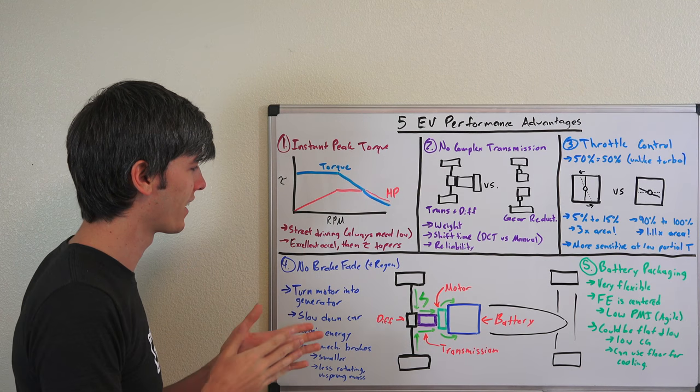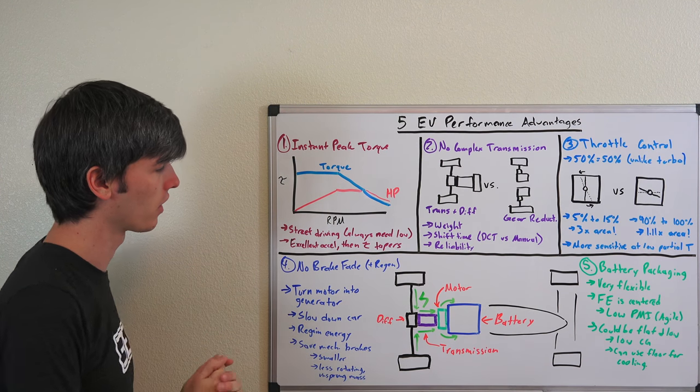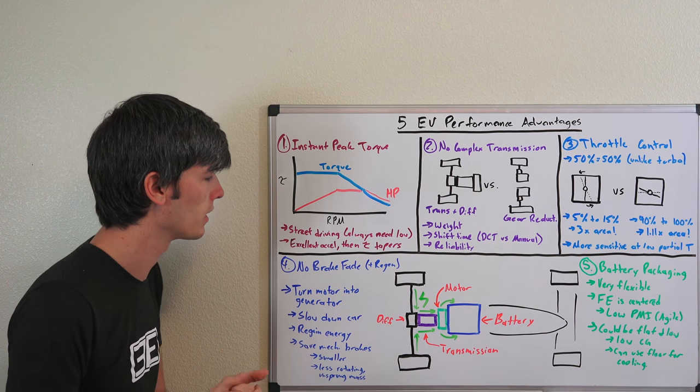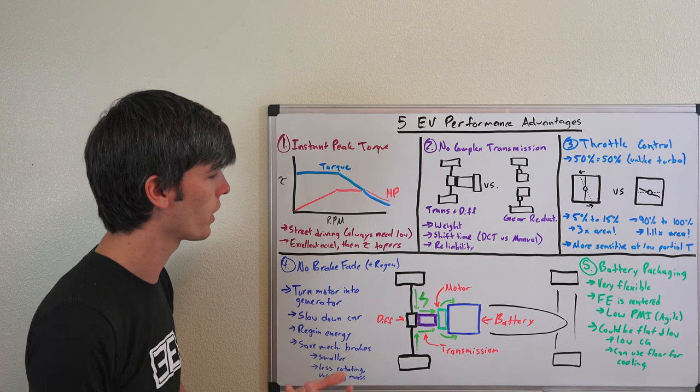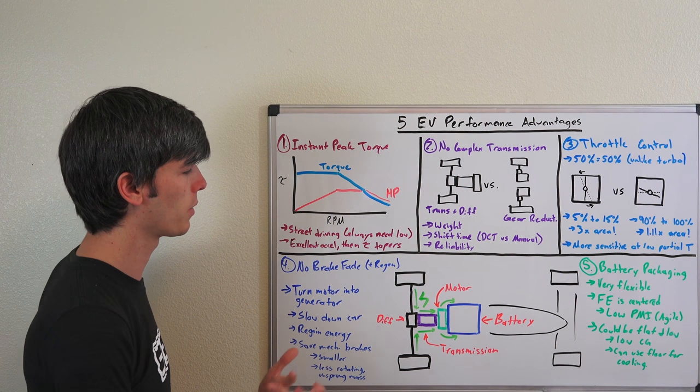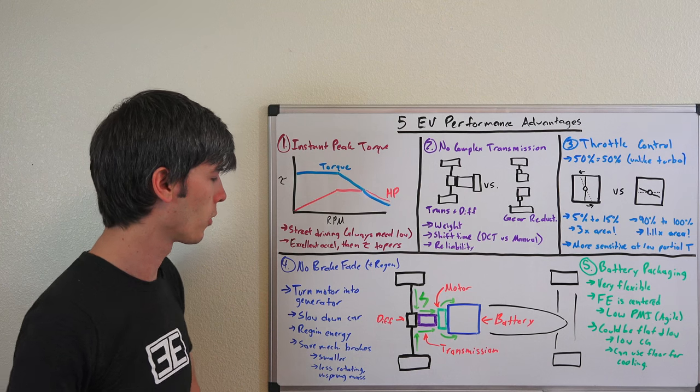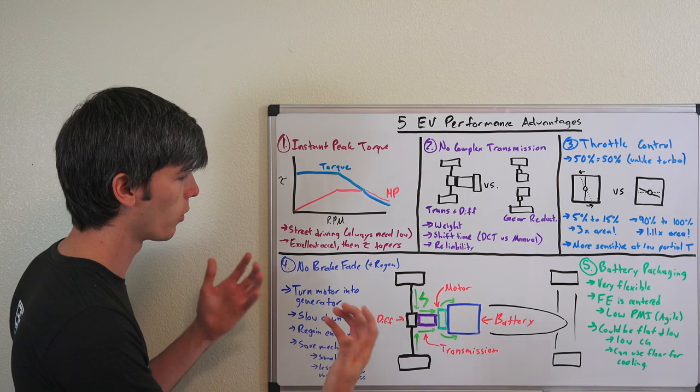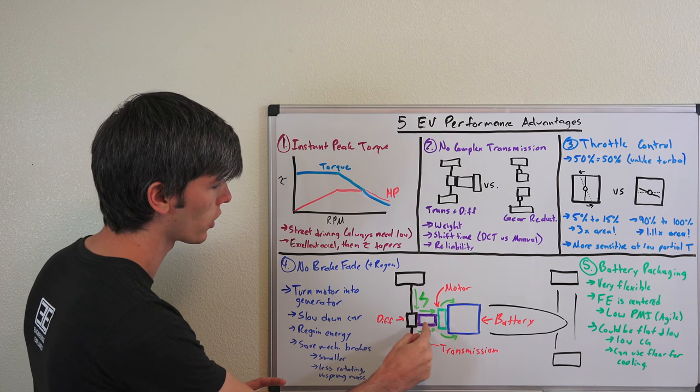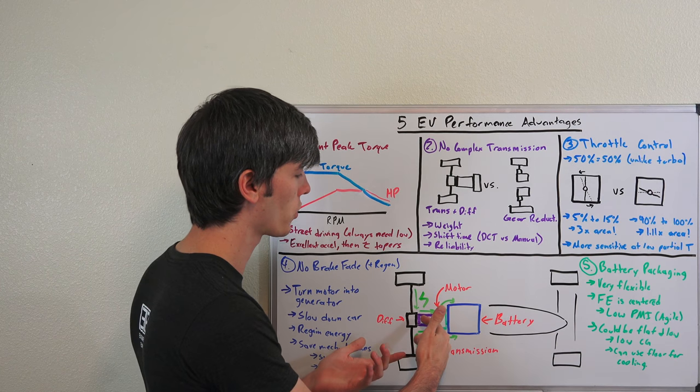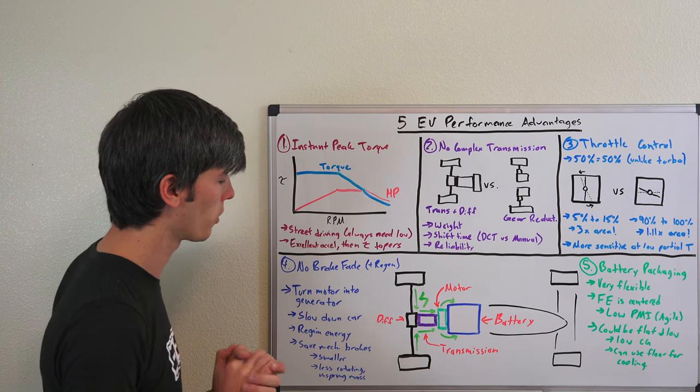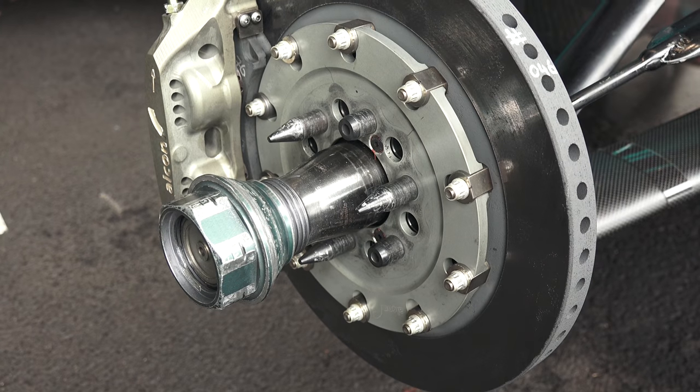Number four is no brake fade. It's not to say that you could never have brake fade in an electric vehicle, but it's far less likely. The reason is because you can regenerate that energy in braking and send it back to the battery rather than using your mechanical brakes to do so. When you slam on the brakes, you can use this electric motor, turn it into a generator, turn that power up and recharge your battery rather than just heating up your mechanical brakes.